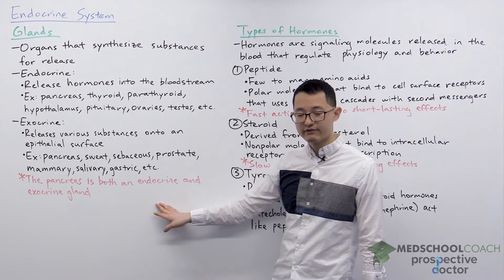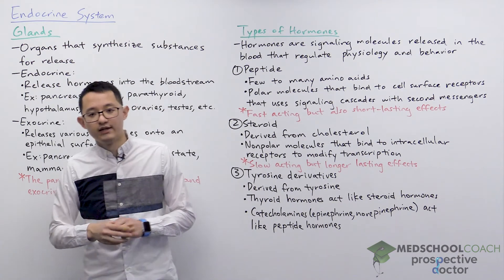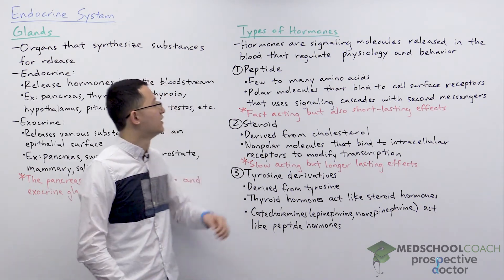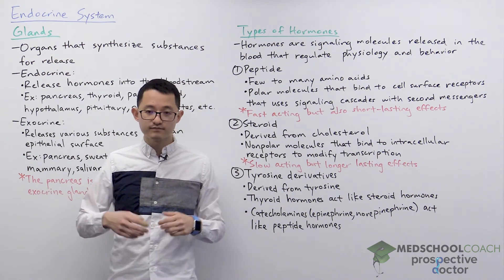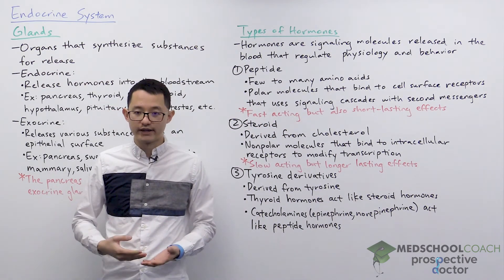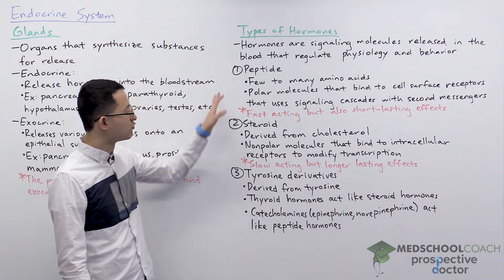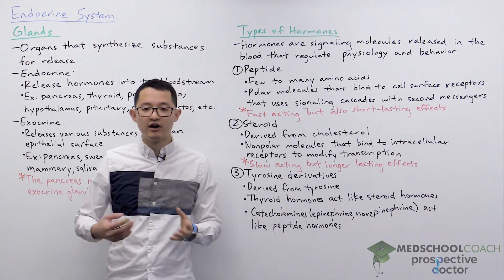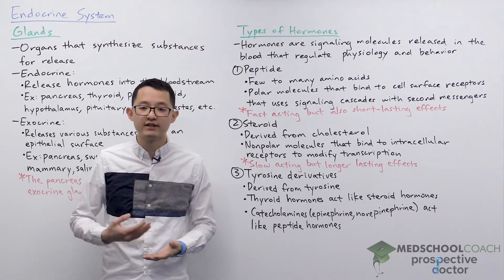Now that we understand the difference between endocrine and exocrine glands, let's talk about hormones. Endocrine glands secrete hormones into the bloodstream. Hormones are signaling molecules released in the blood that regulate physiology and behavior. In terms of these hormones, we can classify them as one of three types: peptide hormones, steroid hormones, and tyrosine derivatives. The key distinction is often between peptide hormones and steroid hormones, essentially in terms of how their signaling works.